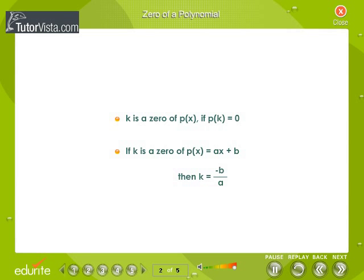Zero of a polynomial: A real number k is called a zero of a polynomial P(x) if P(k) is equal to 0. If k is a zero of P(x) = ax + b, then P(k) = ak + b = 0, and k = -b/a.